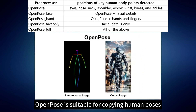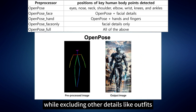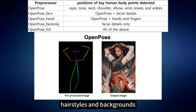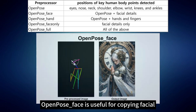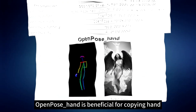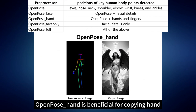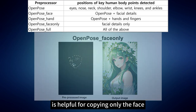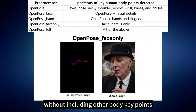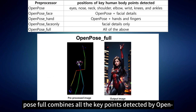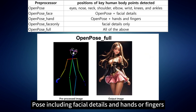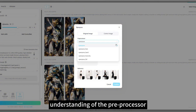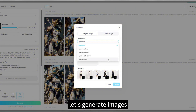Open Pose is suitable for copying human poses while excluding other details like outfits, hairstyles, and backgrounds. Open Pose Face is useful for copying facial expressions along with the body pose. Open Pose Hand is beneficial for copying hand poses along with the body posture. Open Pose Face Only is helpful for copying only the face without other body key points. Open Pose Full combines all key points including facial details and hands or fingers.